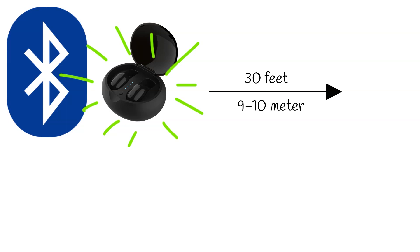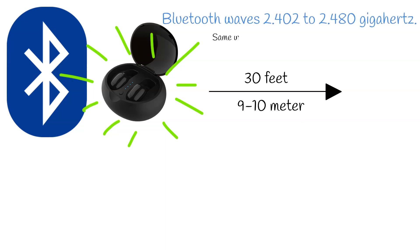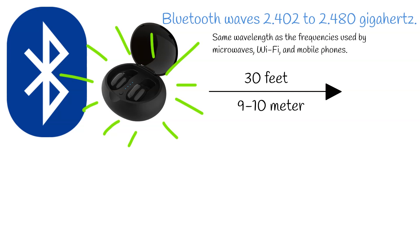Bluetooth waves typically operate within a frequency range of 2.402 to 2.480 gigahertz. This occurs in the same wavelength as the frequencies used by microwaves, Wi-Fi, and mobile phones.